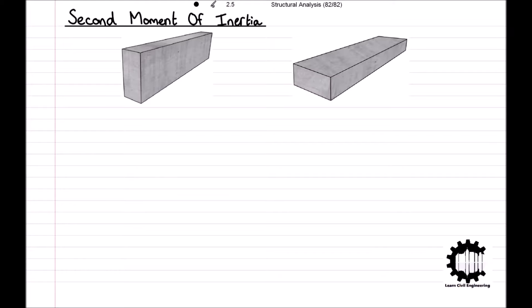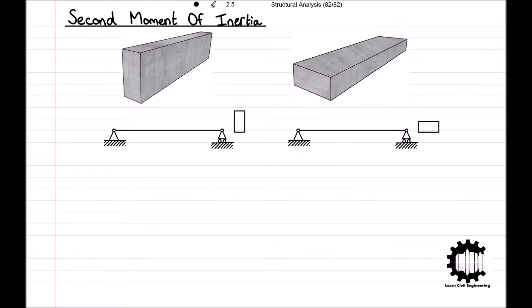Consider these two beams which can be modelled like so. They are both supported by a hinge support at one end and a roller support at the other end. Both beams are made out of the same concrete and have the same length, and the two beams also have the same rectangular cross-sectional area. However, the beam on the right is rotated 90 degrees such that it is flat.